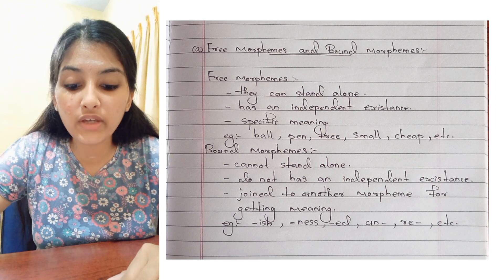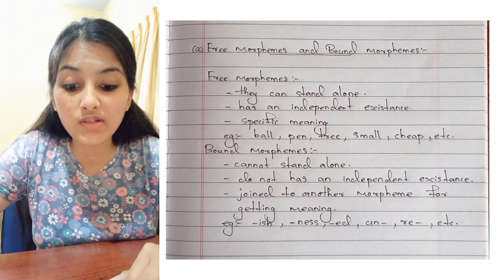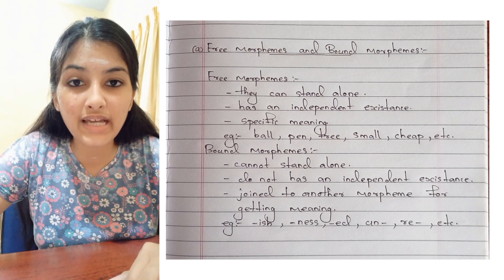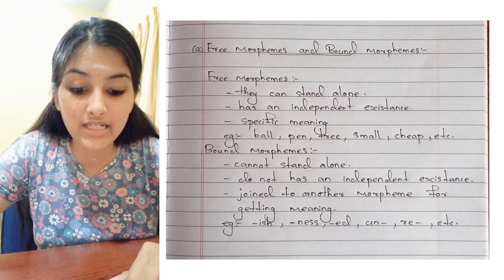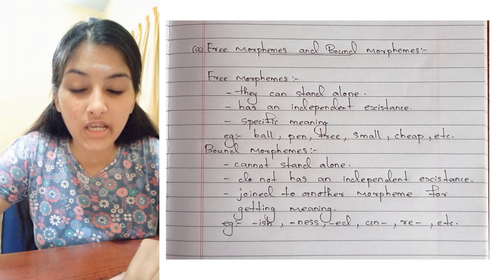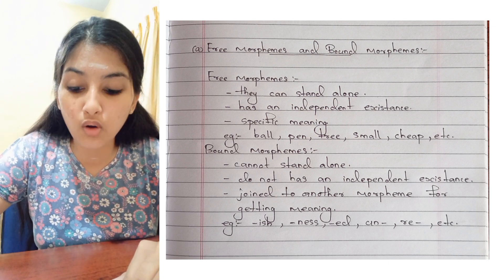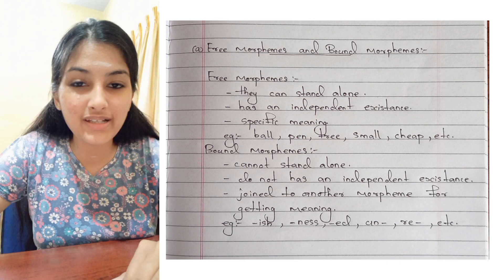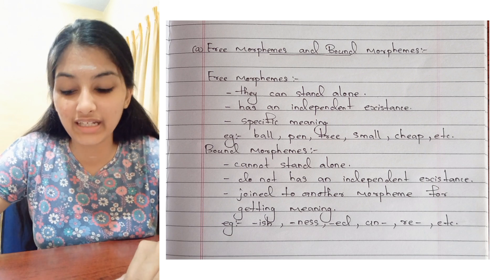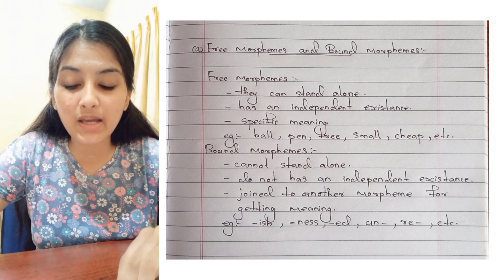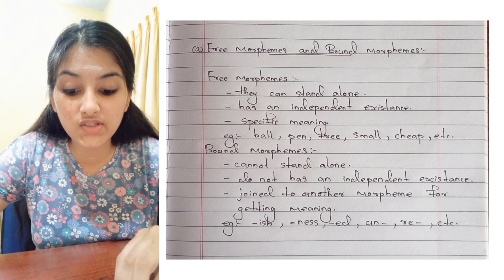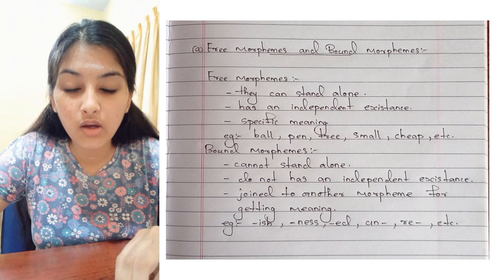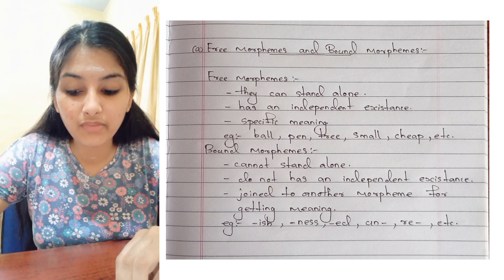Bound morphemes are those morphemes which cannot stand alone or which do not have an independent existence. They should be joined to another morpheme to get a specific meaning. Examples: -ish, -ness, -ed, un-, re-, etc.